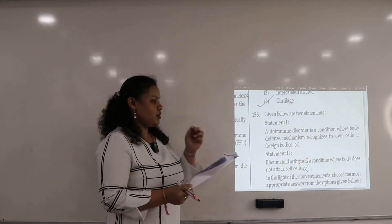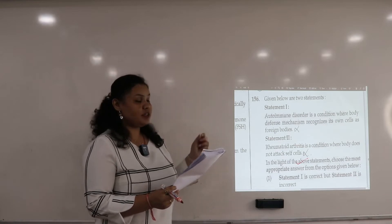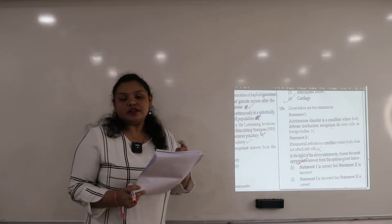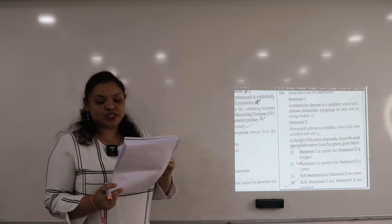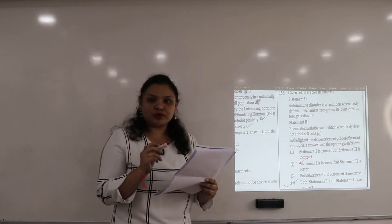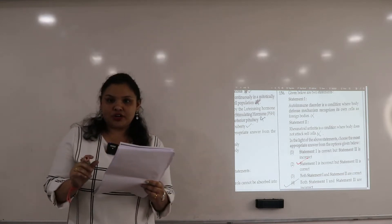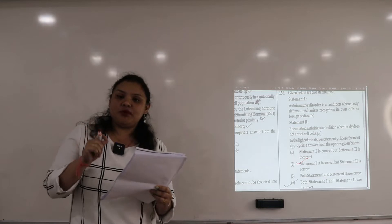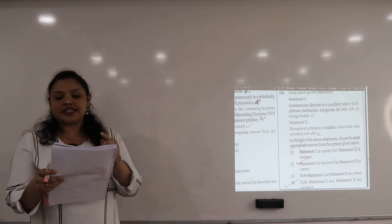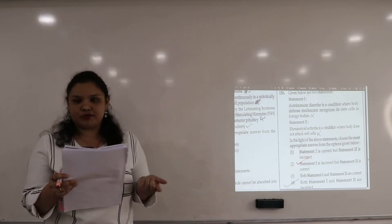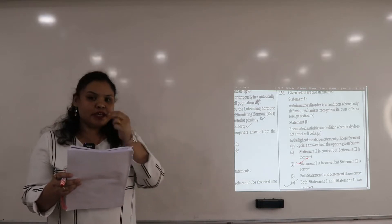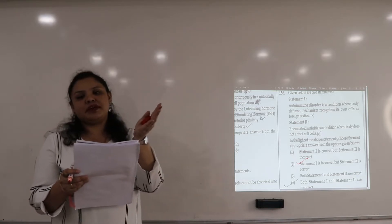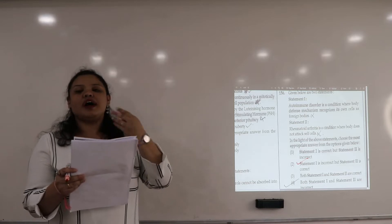Next question, question number 156. This is a two statement question. In the first statement, we are asking: autoimmune disorder is a condition where the body's defense mechanism recognizes its own cells as foreign bodies. What do we learn about it? That self and non-self cells, they attack their own body's own cells.